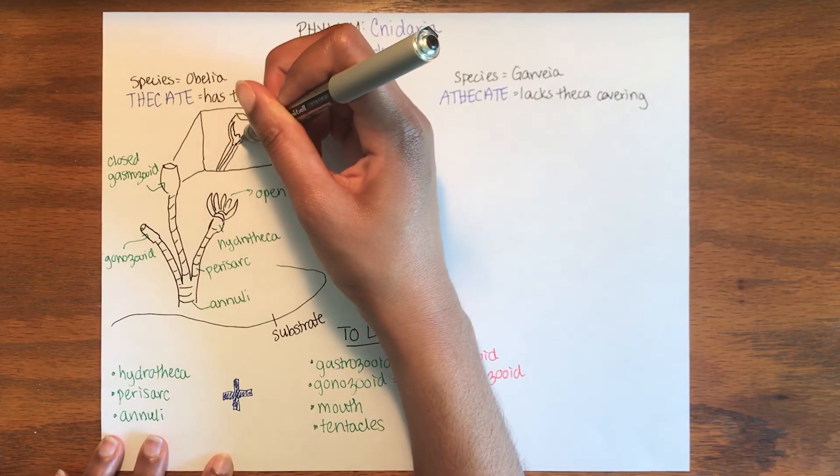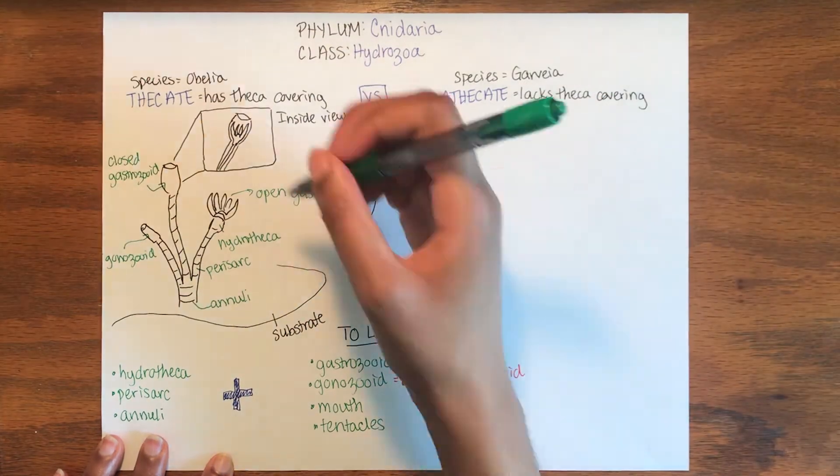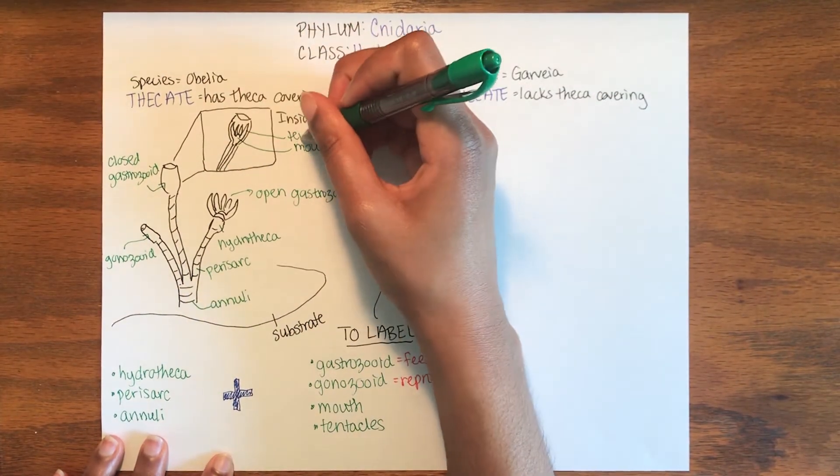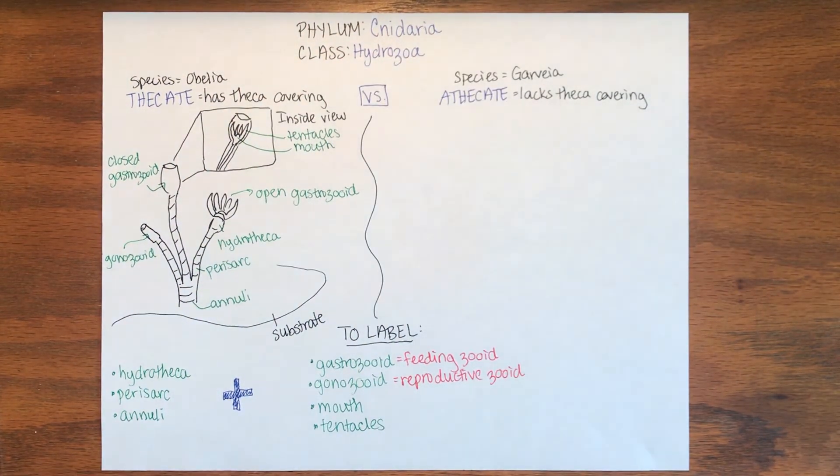Here is an inside view of a retracted gastrozoid. Think about what kinds of advantages having a theca might give the hydroid.